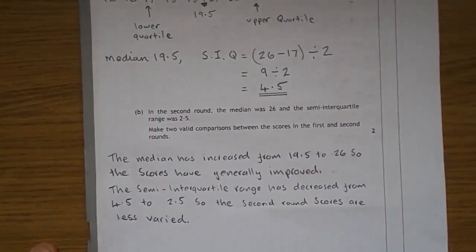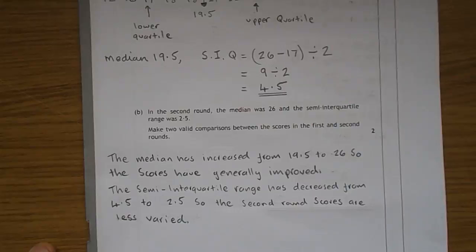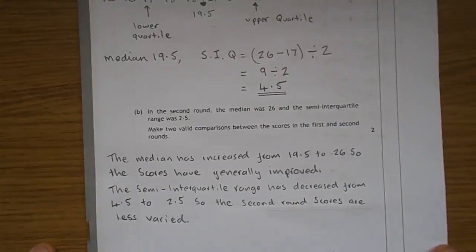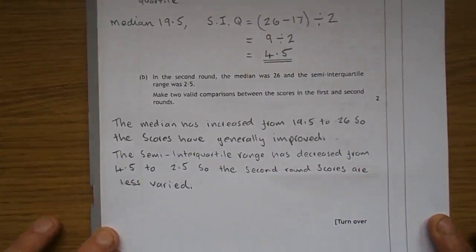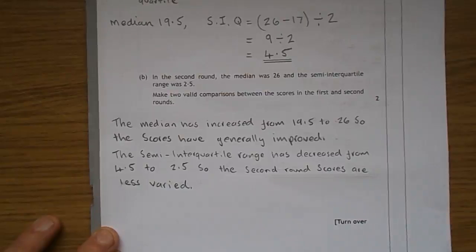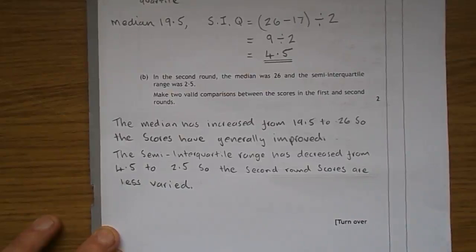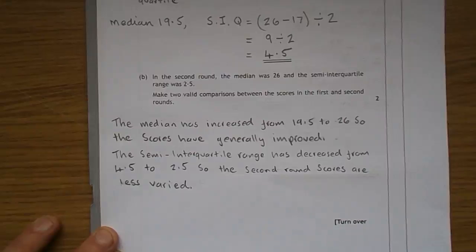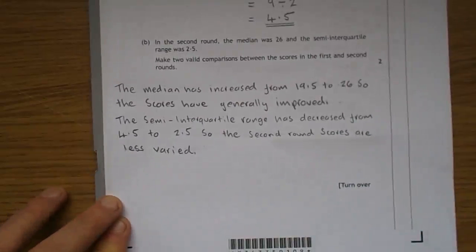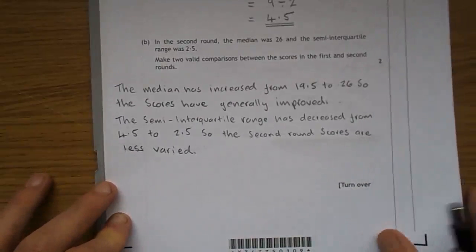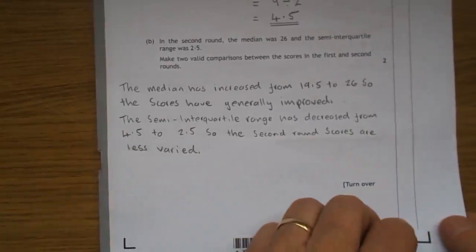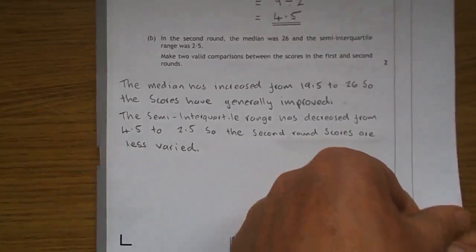Part B: in the second round the median was 26 and the semi-interquartile range was 2.5. Make two valid comparisons between the scores in the first and second rounds. The median has increased from 19.5 to 26, so the scores have generally improved. The semi-interquartile range has decreased from 4.5 to 2.5, which means the second round scores are less varied, more grouped together than in the first round.